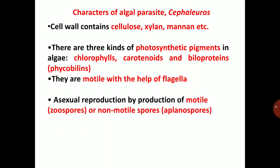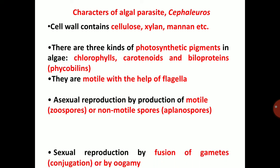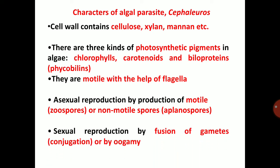Asexual reproduction occurs by production of motile zoospores or non-motile spores called aplanospores. Sexual reproduction occurs by fusion of gametes, that is conjugation or by oogamy.